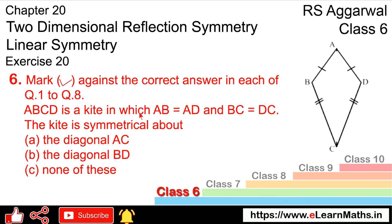Let's do the next question. ABCD is a kite in which AB is equal to AD, and BC is equal to DC. The kite is symmetrical about which diagonal? The kite is symmetrical about...